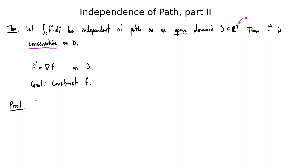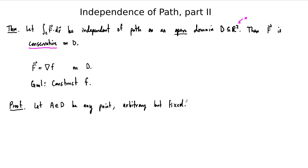Our vector field F is supposed to be conservative on the entire domain D. So our first job is to pick any point in D. Let's let A in D be any point, but once we pick this point we are going to fix it. In later math classes, you'll call this a fixed but arbitrary point.